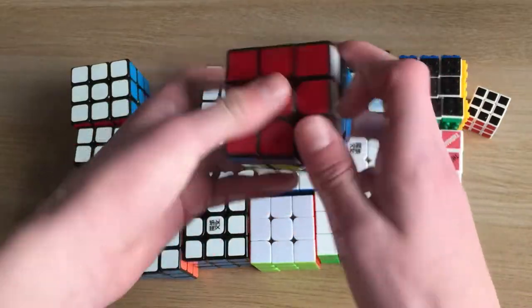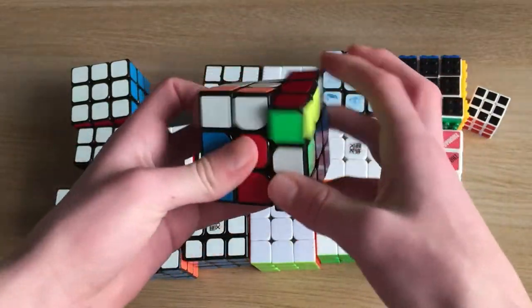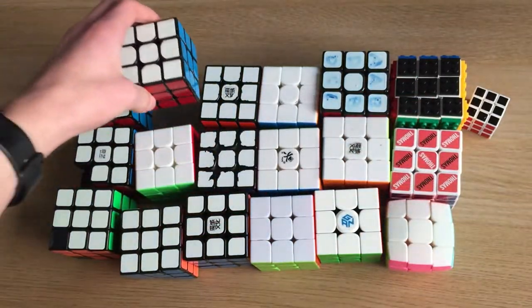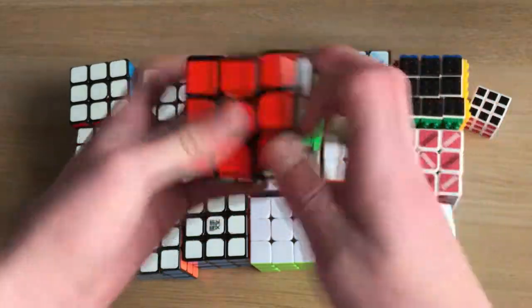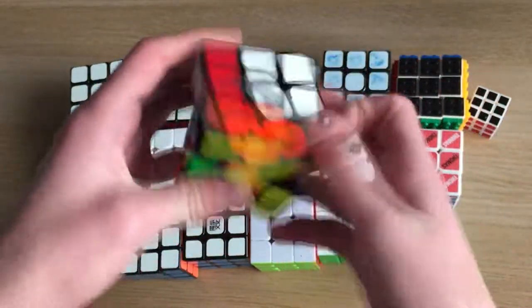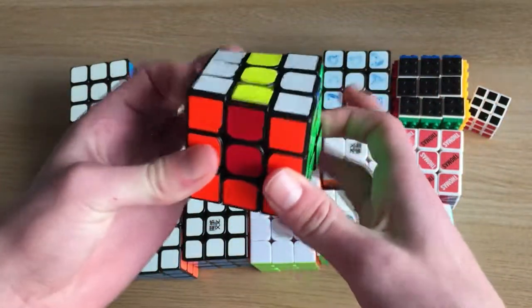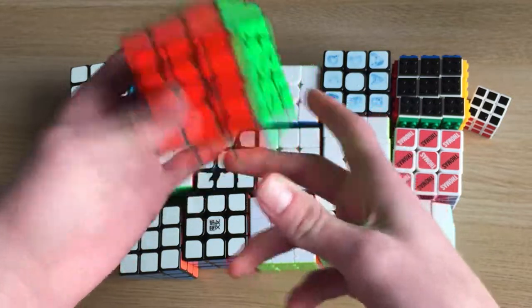The MF3RS2M, which I magnetized myself, and is the only cube I've ever done that to. This was also my main for quite a while. I have the GTS2M, which I put MF3RS2 springs in a while ago and it was my main, but I've since took them out. But it's pretty good for one-handed.